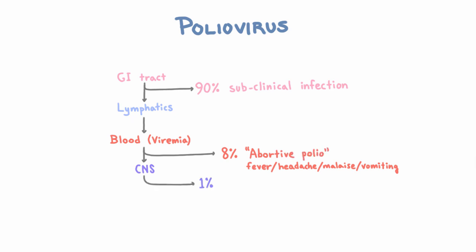Now in 1% of people, the virus does go on from the blood into the CNS, but it doesn't get to the point of killing motor neurons or causing paralysis. So how do we know it's in the central nervous system? Two ways: first, we can actually find it in the CSF; and second, there will be symptoms of meningitis because the virus is causing some inflammation — neck stiffness, photophobia, fever. And we call this non-paralytic poliomyelitis.